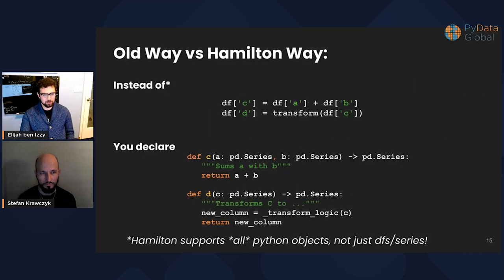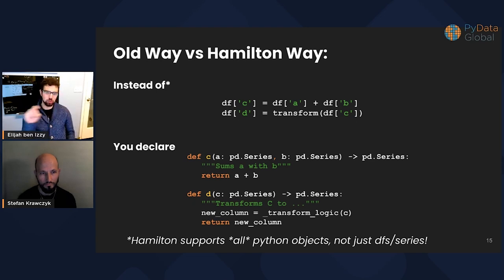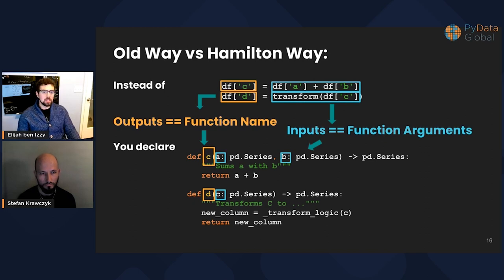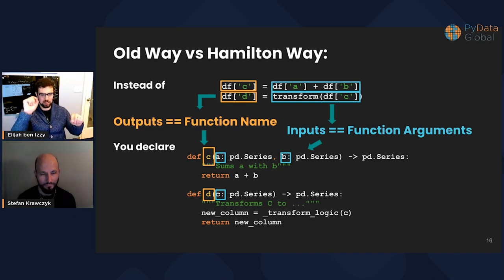Here's what it looks like in practice. Instead of writing procedural data frame transformations, you declare your transformations as functions. Hamilton supports all Python objects, not just data frames and series. Your outputs correspond to the function name, and the inputs are the function arguments — dfc depends on defc, dfd corresponds to defd. The inputs are the function arguments. Hopefully pretty simple.